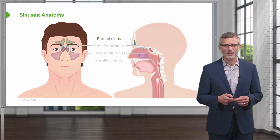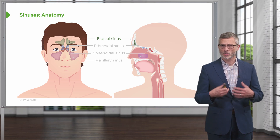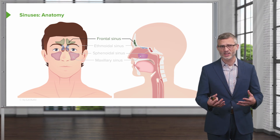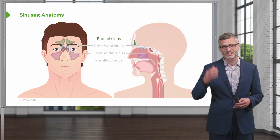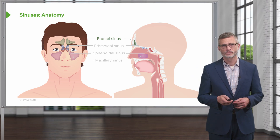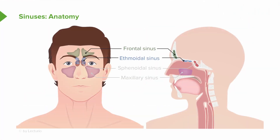Regarding the sinuses, in terms of being able to palpate or percuss over them, all we have access to is the frontal sinus. More posteriorly are the ethmoid and sphenoid sinuses, which we don't really have access to. Otherwise, we can tap on the maxillary sinuses, as we'll discuss.